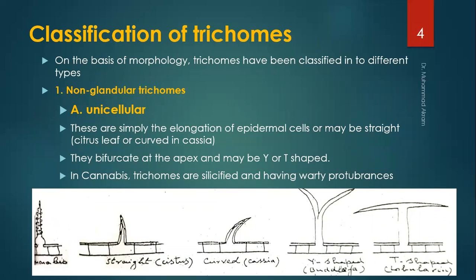Classification of trichomes: On the basis of morphology, trichomes have been classified into two different types. Number one: the non-glandular trichomes. A) Unicellular — these are simply the elongation of the dermal cells or may be branched. The unicellular non-glandular trichomes may bifurcate at the apex and may be Y- or T-shaped. In cannabis, trichomes have multi-protuberances, meaning wave-like structures above the surface of the epidermis.